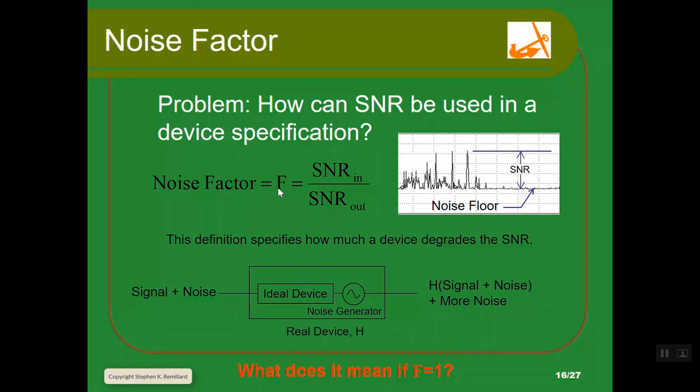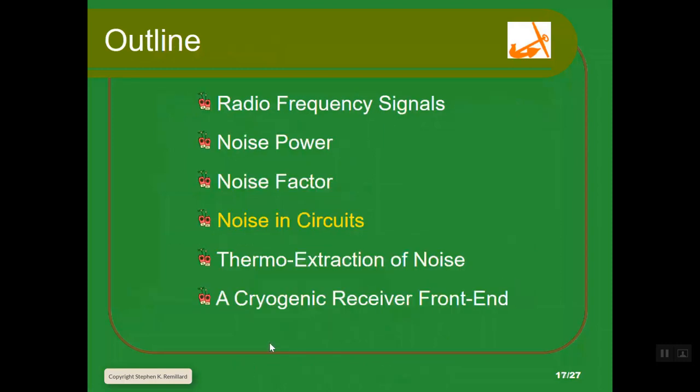So you have signal and noise going into a device and signal and more noise coming out. H is the transfer function. The input signal and noise is operated on by the transfer function, but then you have more noise. Depict that with a noise generator right after the ideal device. What if f equals 1? If the noise factor is 1, the signal to noise ratio in equals the signal to noise ratio out, and the device doesn't add any noise.